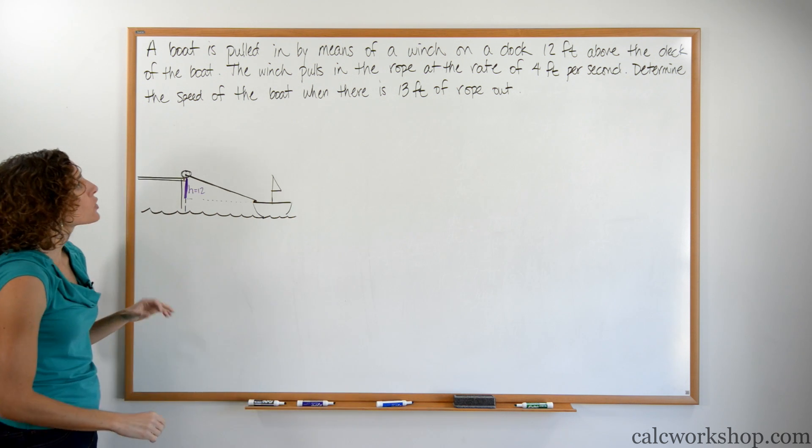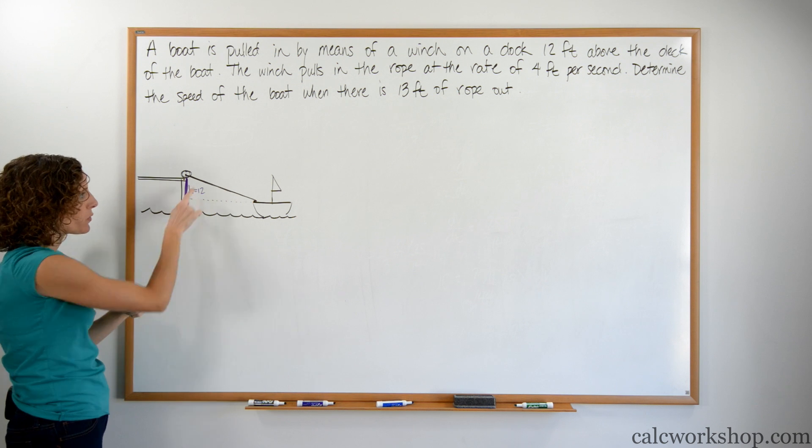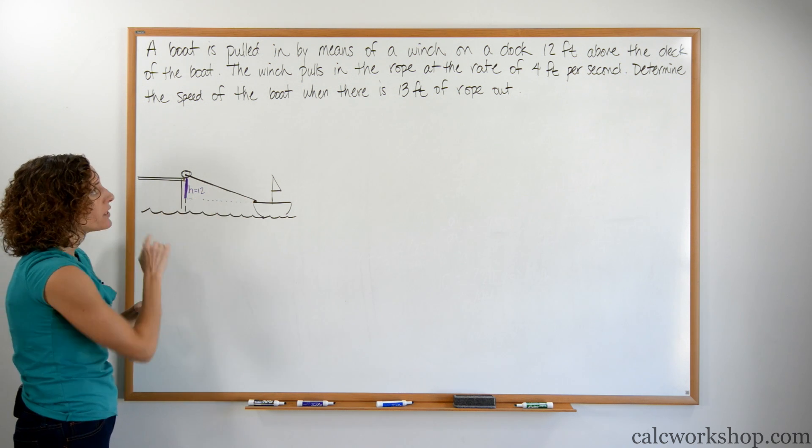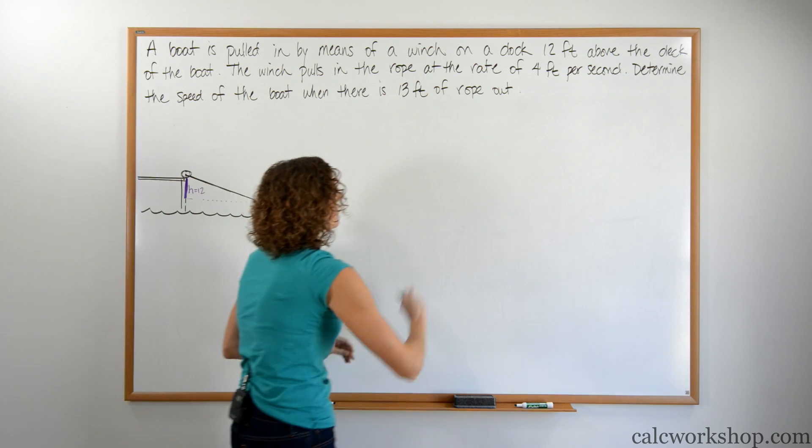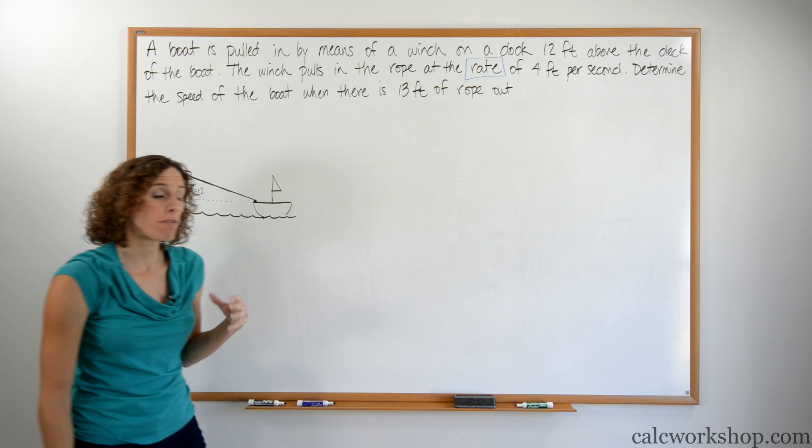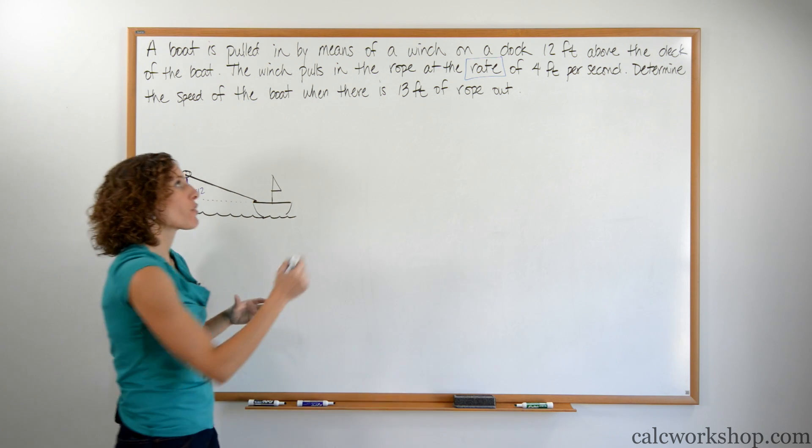It says the winch pulls the rope in. Where's the rope? The rope is the hypotenuse of our triangle. So here's the rope getting pulled in at a rate. The word rate means derivative of 4 feet per second. What rate? What derivative? The rope.